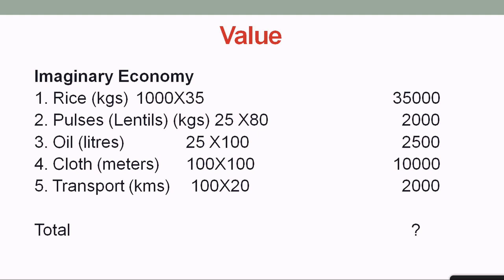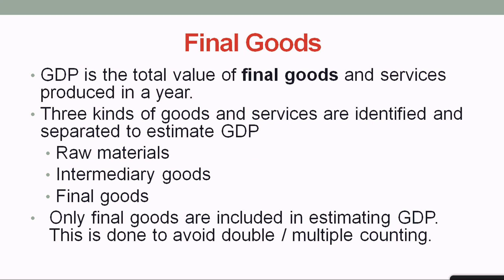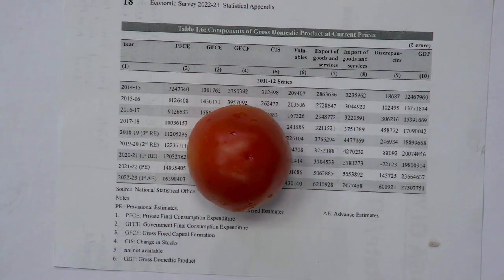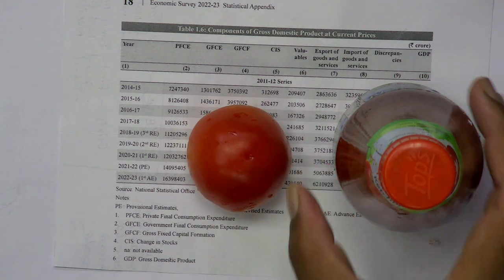Now let me explain another important term in the definition: 'final goods.' When you produce commodities, you may require raw materials and intermediary goods before arriving at final goods. For example, a farmer is cultivating tomatoes — the tomato is the raw material. When it comes to the ketchup factory, the factory uses this tomato and makes ketchup in a bottle form — going from raw material to a finished product.